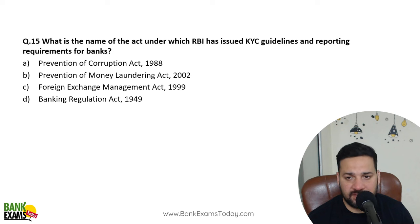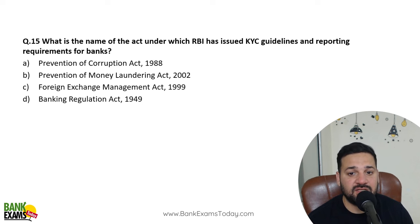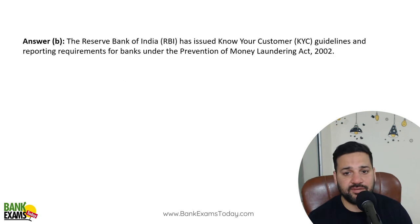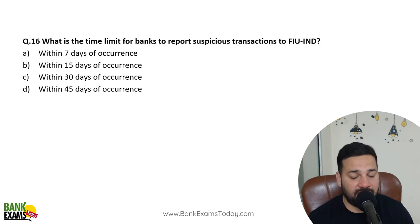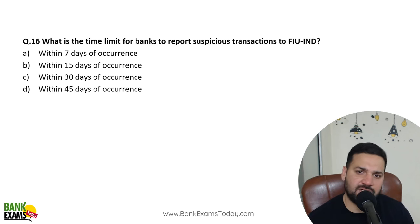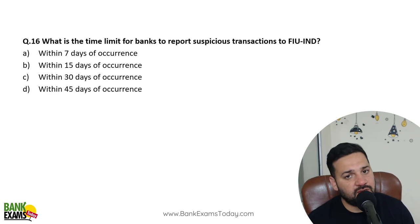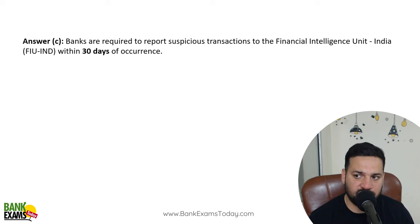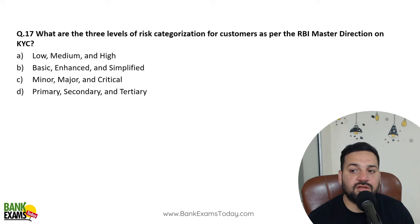Which act gives RBI authority to issue KYC guidelines and reporting requirements? The answer is the Prevention of Money Laundering Act (PMLA) 2002. What is the time limit for banks to report suspicious transactions to FIU-IND? If a suspicious cash deposit occurs, the bank must report it to FIU-IND within 30 days of the occurrence of such a transaction. There are three levels of risk categorization: Low, Medium, and High.